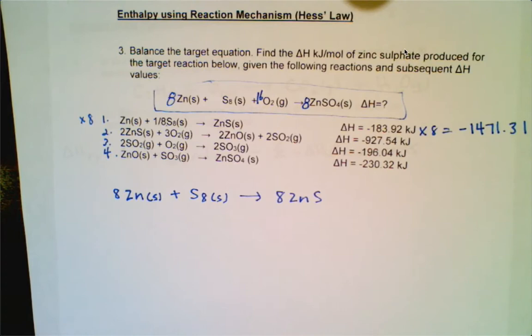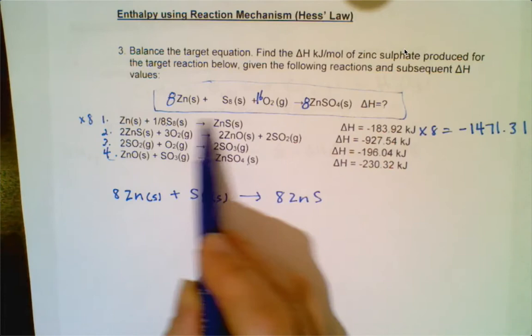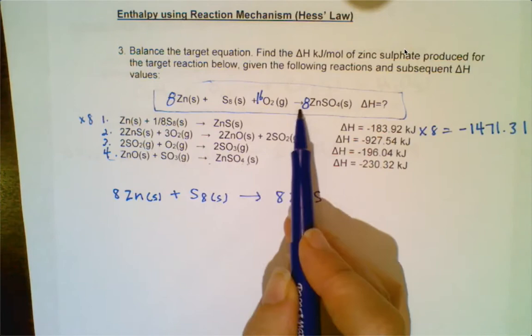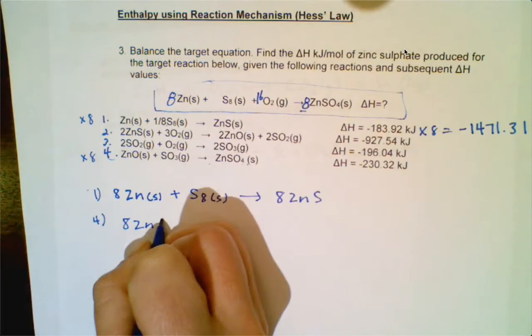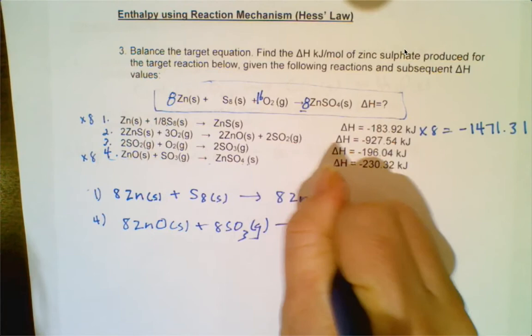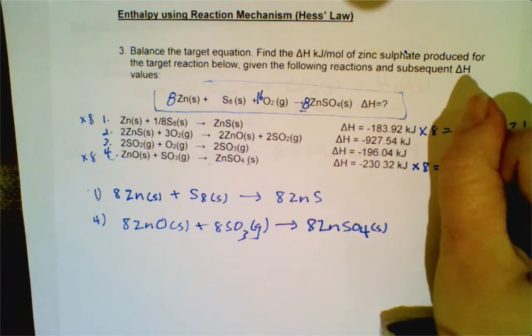Then I look for reaction number four, which has zinc sulfate — it's the only one with zinc sulfate. It's a product in that elementary step and I want it as a product. There's only one mole and I want eight moles, so I multiply step four by eight. That gives eight zinc oxides plus eight sulfur trioxides yielding eight zinc sulfates. I multiply the enthalpy by eight as well, giving negative 1,842.56.